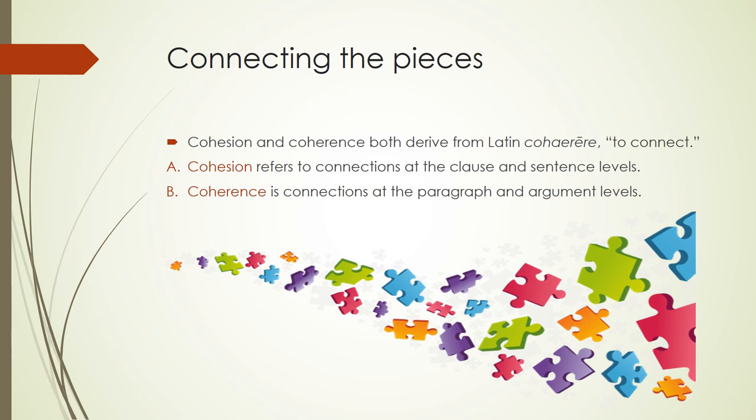Cohesion and coherence both derive from Latin 'cohere,' an infinitive meaning to connect. Cohesion refers to connections at the clause and sentence levels, while coherence is connections at the paragraph and argument levels. A puzzle metaphor is helpful: think of cohesion as connecting sentences together the way individual pieces of a jigsaw puzzle fit together, and coherence as seeing what all the sentences add up to — the way all the pieces form a big beautiful picture painted on the box. This style lesson discusses how to connect the pieces at the sentence and paragraph levels.